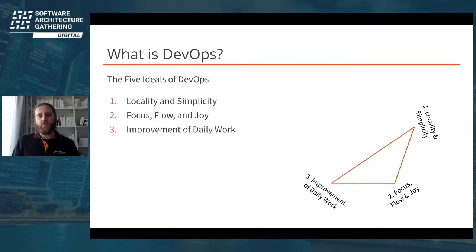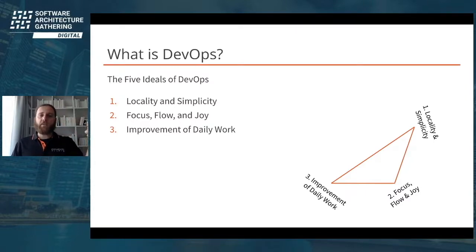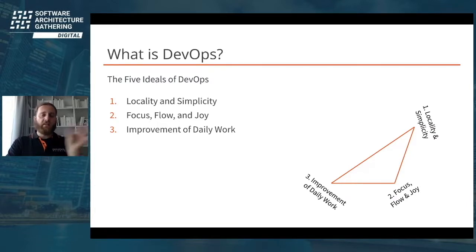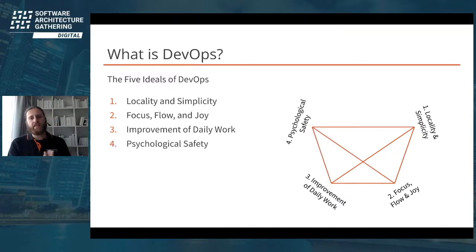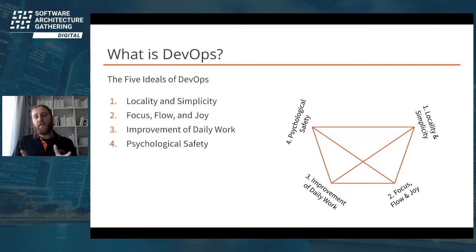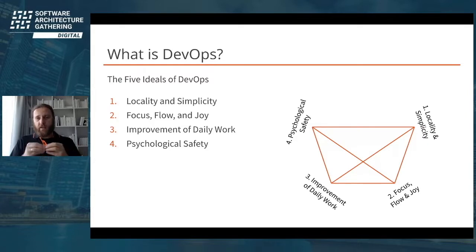Joy can be created by being focused and having good workflow, which helps us become confident and experience joy in our day-to-day work. The third ideal of DevOps is improvement of daily work — one very small improvement every day is more important than a big improvement at the end of the year. Think of a New Year's resolution and instead try to do one very simple thing every day. The fourth ideal is psychological safety — only if we can feel safe can we be creative, and creativity is the foundation of working as a software engineer or architect.